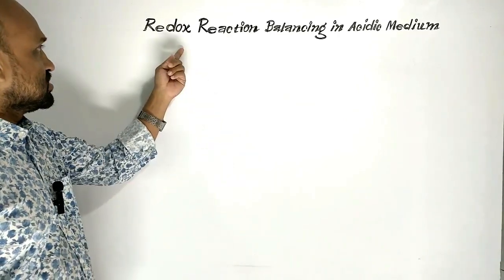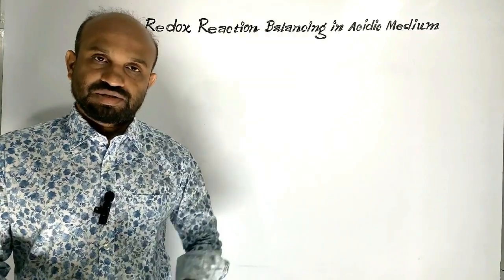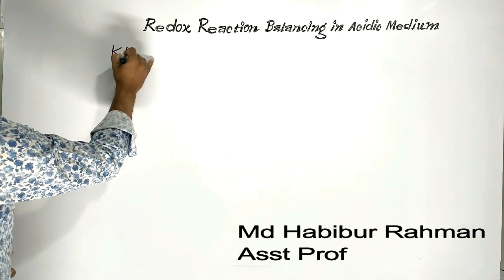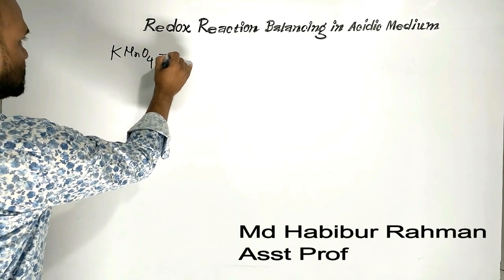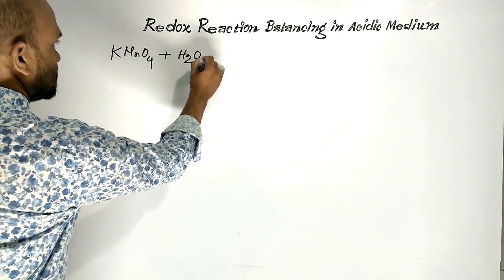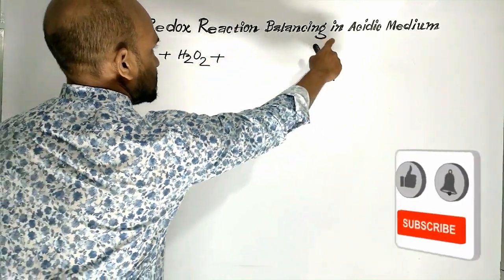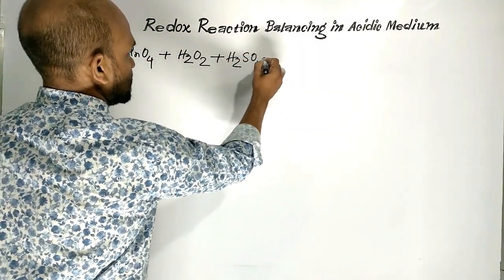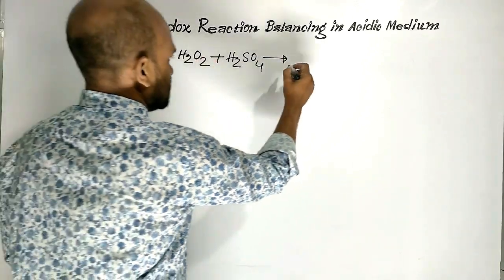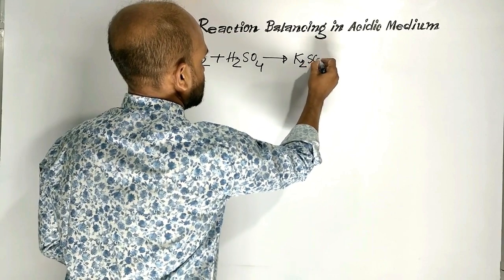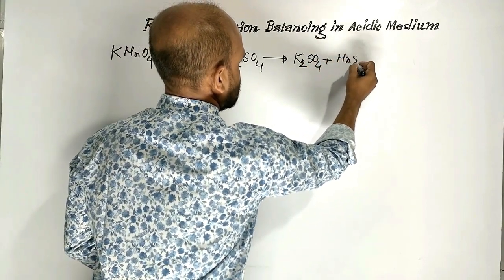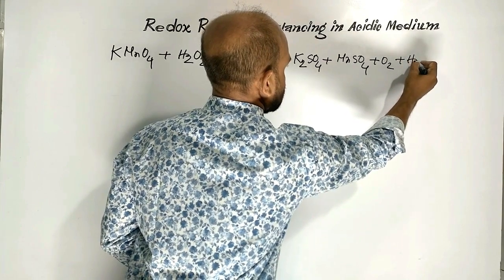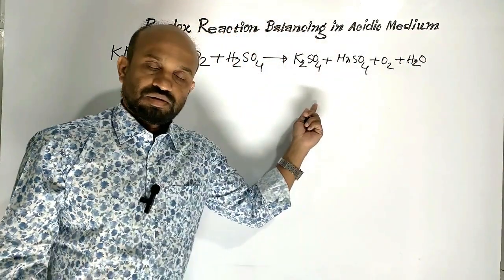Today's lesson: Redox Reaction Balancing in Acidic Medium. The reaction involves potassium permanganate and hydrogen peroxide, conducted in acidic medium — suppose sulfuric acid. The products are potassium sulphate, manganese sulphate, oxygen, and water. This is today's reaction.